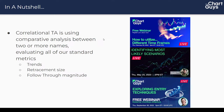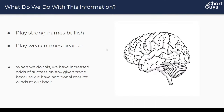In a nutshell, correlational TA is using comparative analysis between two or more names and evaluating all of our standard TA metrics — our trends, our retracement sizes, our follow-through magnitude. That's why this is the final of the four-part series, because it hinges on information from the other three. You can't really utilize correlations effectively if your foundations are not rock solid. Simply put: play the strong names bullish and the weak names bearish — this increases odds of success on any given trade because we have additional market winds at our back.